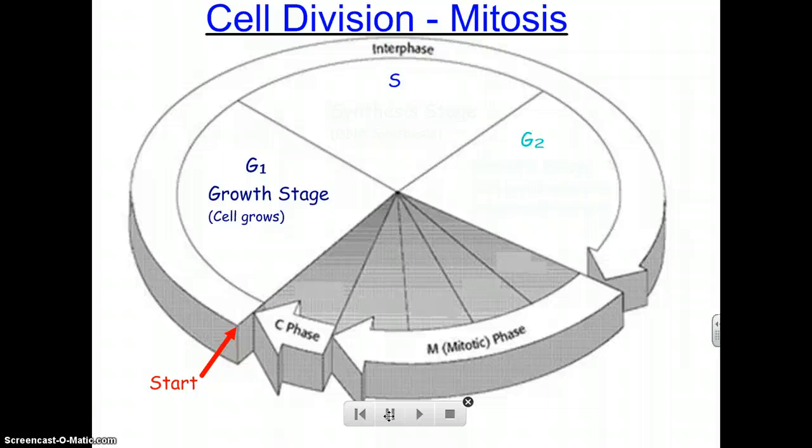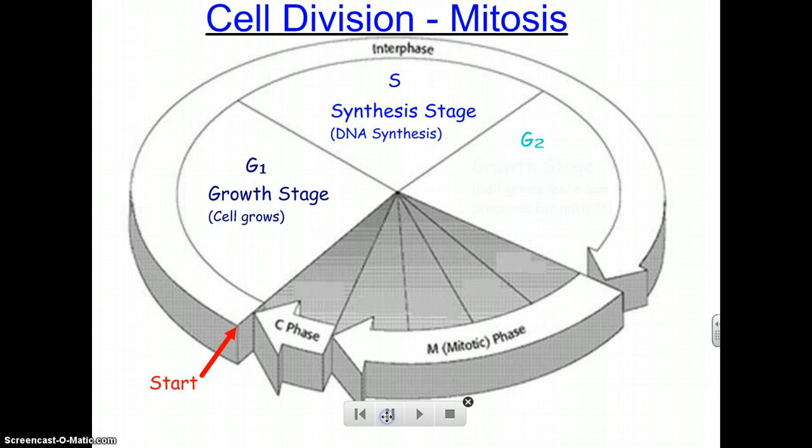After the cell grows for a while, it enters the S stage. This is where the DNA is copied until there are two complete sets of DNA. What process copies DNA again? Replication. I like to call this the teenage years. The teenage cell now goes through the S phase, known as synthesis stage. Thus, the S. The DNA is synthesized.